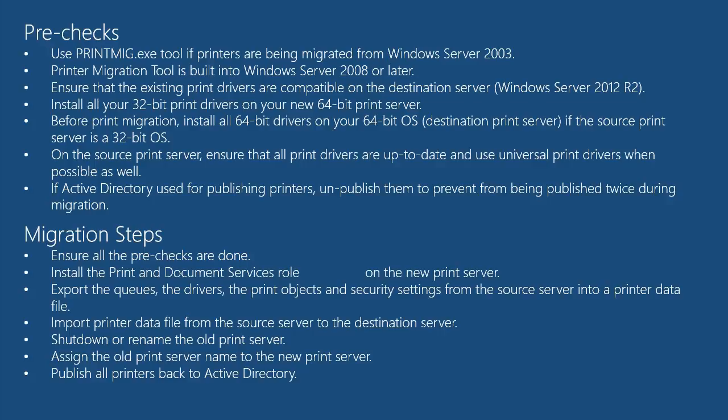Once you have all these pre-checks completed, you will start the migration. First, you will install the Print and Document Services role on your new print server running 2012 or 2012 R2. After that, you are going to use the print migration tool to export print queues, drivers, objects, and security settings from your source server.